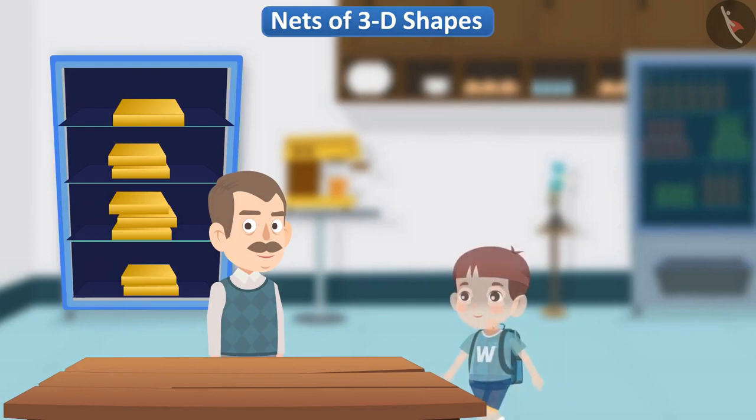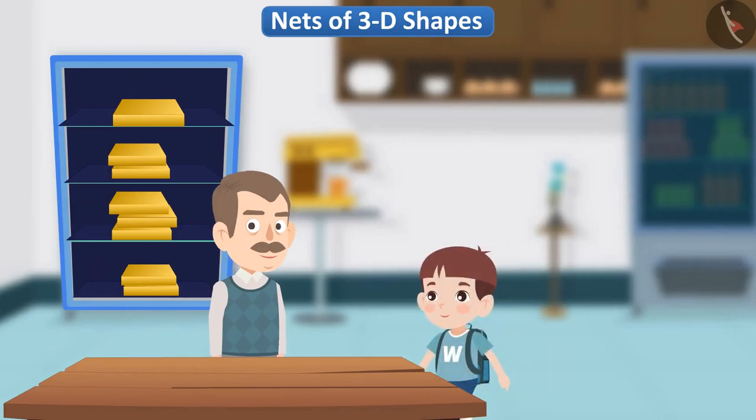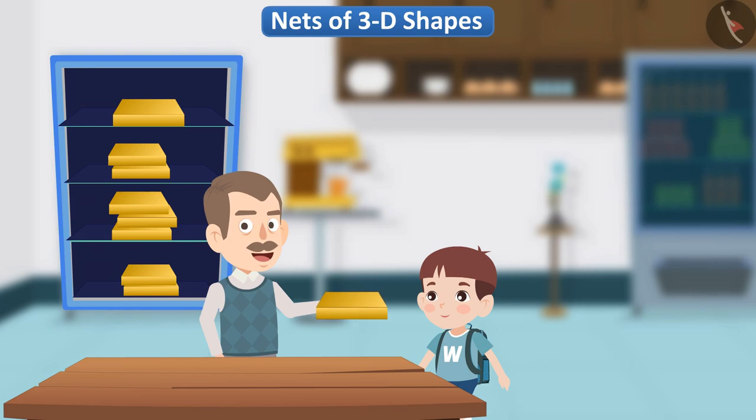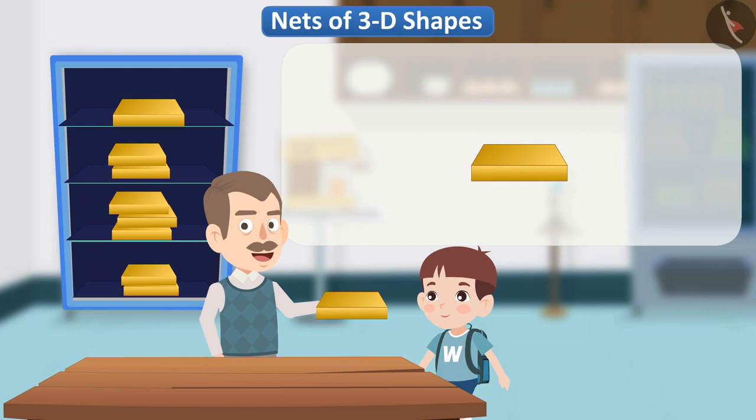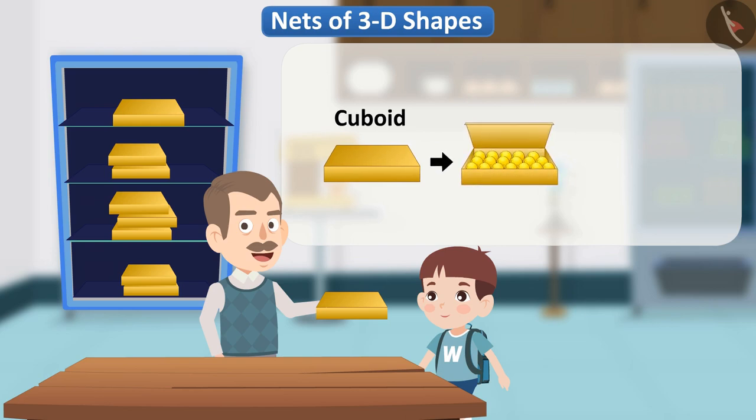When you go to the sweet shop to get sweets, the confectioner gives you sweets in a box. Often, the boxes at the sweet shop are cuboid shaped. If you open any such box and level it, you will see its net.